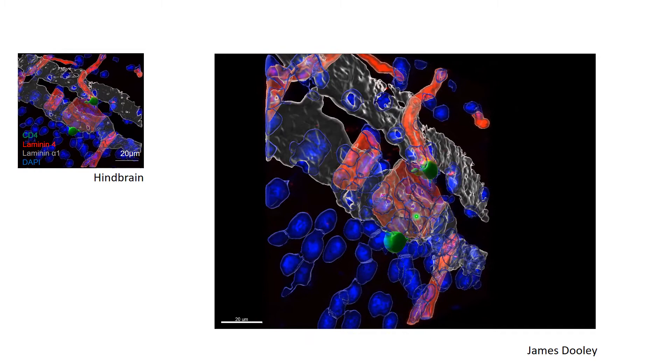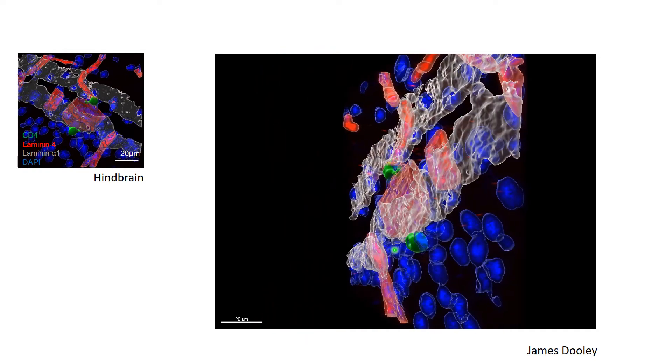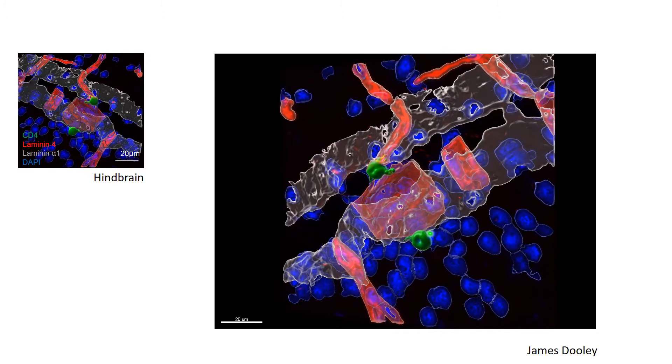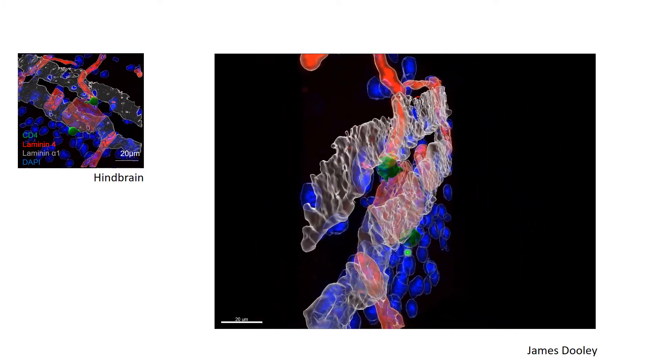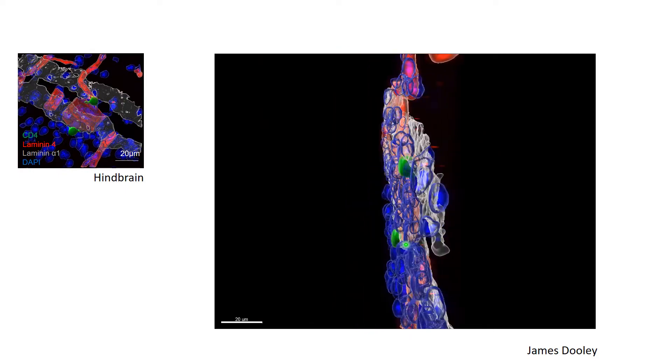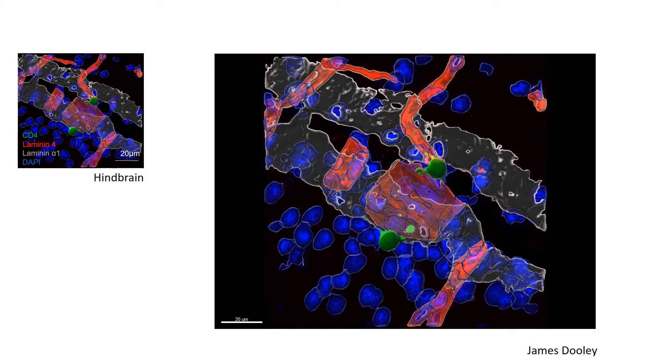This is a second example of T-cells entering or leaving the meninges. If we look at the bottom T-cell, we can see that most of this cell is outside the double laminin barrier and therefore outside the meninges. However, there are still small protrusions of this cell inside the meninges, indicating again that this cell is in the process of entering or leaving the meninges.